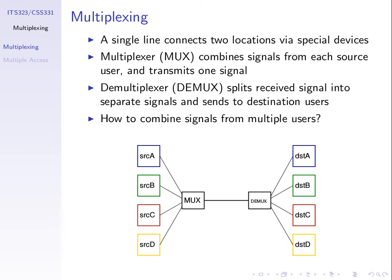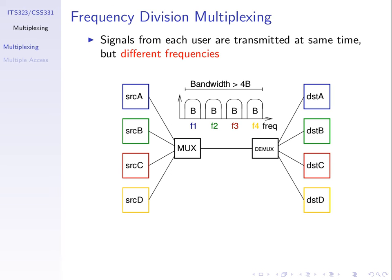The multiplexer needs to combine the signals from four sources to produce one output signal. There are two basic approaches: one combines the signals using a different set of frequencies — that's called frequency division multiplexing (FDM). The second approach transmits at different times for each user — that's time division multiplexing (TDM). Let's look at them.